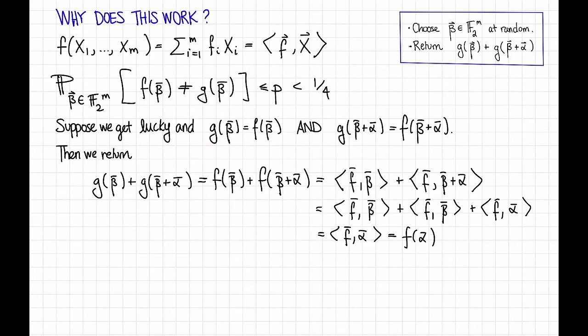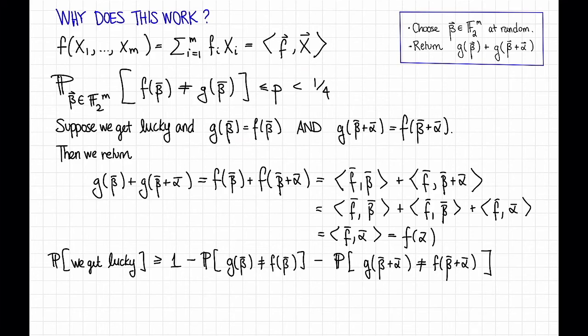Now let's compute the probability that we get lucky in this way. Okay, so this is greater than or equal to 1 minus the probability that this fails to happen minus the probability that this fails to happen. Here we're just using the union bound.